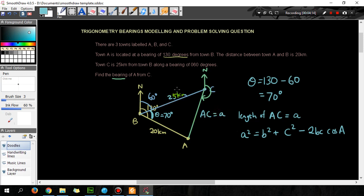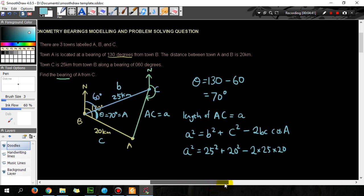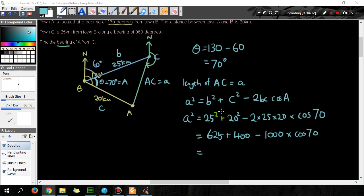25 is side, doesn't matter which is which, I'm just gonna call it side b, side c and this angle is angle A. So putting the numbers that I have in here, I got a² is equal to 25² plus 20² minus 2 times 25 times 20 times cosine 70. So type all that into the calculator and the answer is...